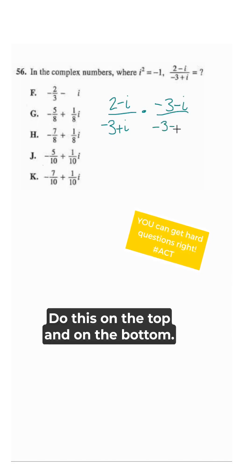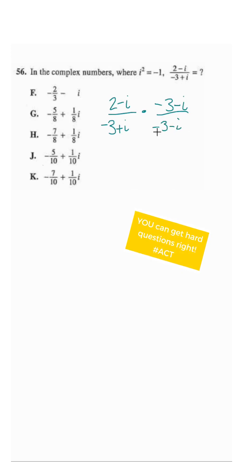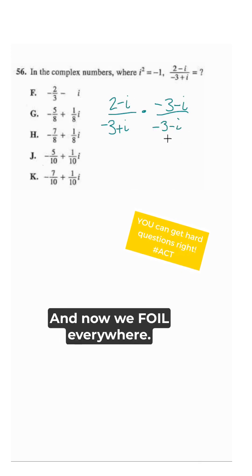Do this on the top and on the bottom. This is really one, which is why we can multiply by it, and now we FOIL everywhere.